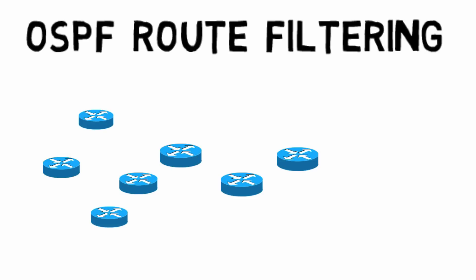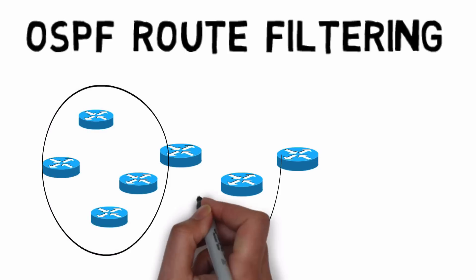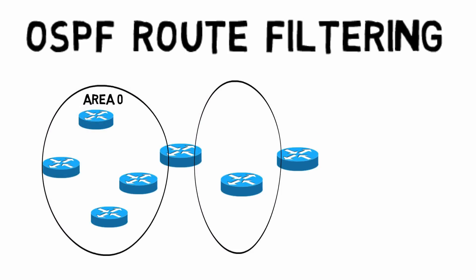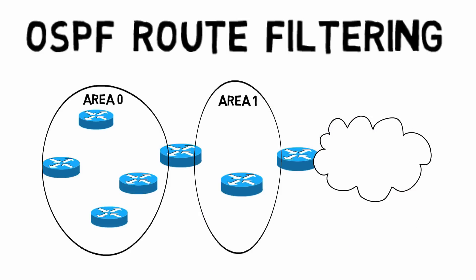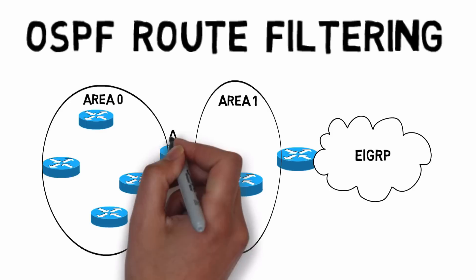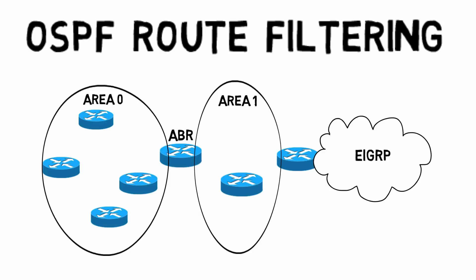There are three primary ways we can go about this. To illustrate these concepts, imagine we have a network with a couple of areas: Area 0 and, connected to Area 0, Area 1. One of the routers in Area 1 is connected to another autonomous system — an EIGRP-speaking autonomous system. The ABR has at least one interface in the backbone area (Area 0) and at least one interface in a non-backbone area (Area 1). We also have an ASBR, which has at least one interface in an OSPF area (Area 1) and at least one interface in the EIGRP-speaking autonomous system.